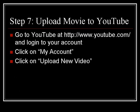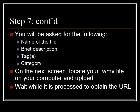In this step, you'll upload your movie to YouTube at YouTube.com. Log in to your account, or create a new account if you need to. Once you're logged in, click on My Account and then click on Upload New Video. When uploading to YouTube, you'll be asked for the following information: the name of the file, a brief description, any tags that you want to give it so people can easily identify it, and the category in which it should be placed. On the next screen, locate your WMV file on your computer and upload it. Wait while it's processed to obtain the URL — this may take a fairly long time depending on the size of your movie.